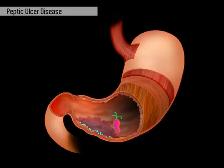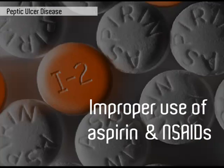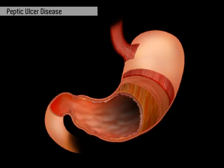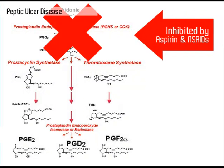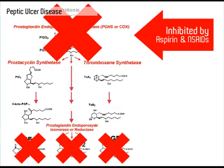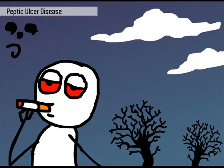Another major cause is the improper use of aspirin and NSAIDs. The gastric mucosa protects itself from gastric acid with a layer of mucus, the secretion of which is stimulated by certain prostaglandins. NSAIDs block the function of cyclooxygenase-1, which is essential for prostaglandin production. Smoking and stress are also risk factors.